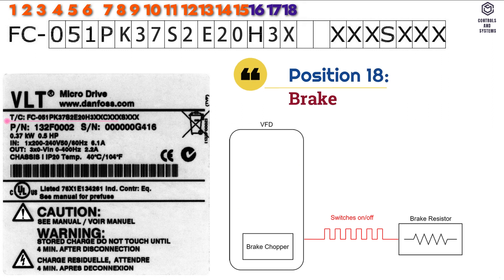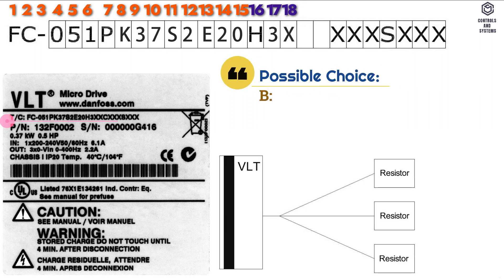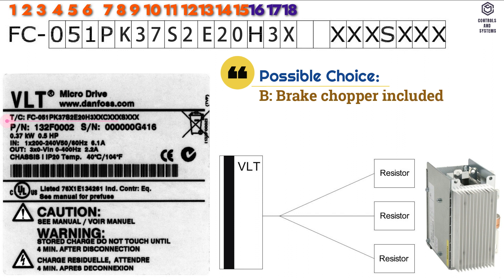Position 18 is brake, possible choice is B that means brake chopper included from 1.5 kW and up, X that means no brake chopper included.